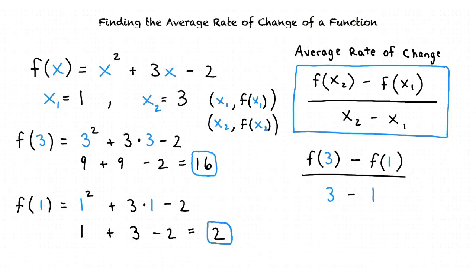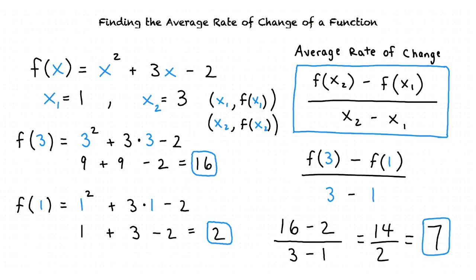Now we substitute the values we found for f of 3 and f of 1 back into the average rate of change formula. The result is 16 minus 2 divided by 3 minus 1. That gives us 14 divided by 2, which equals 7.